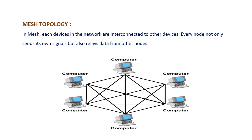Mesh topology is much more reliable. All the devices are interconnected to other devices. Every node not only sends its own signal but also relays data from other nodes. It is more reliable when compared to other topologies.